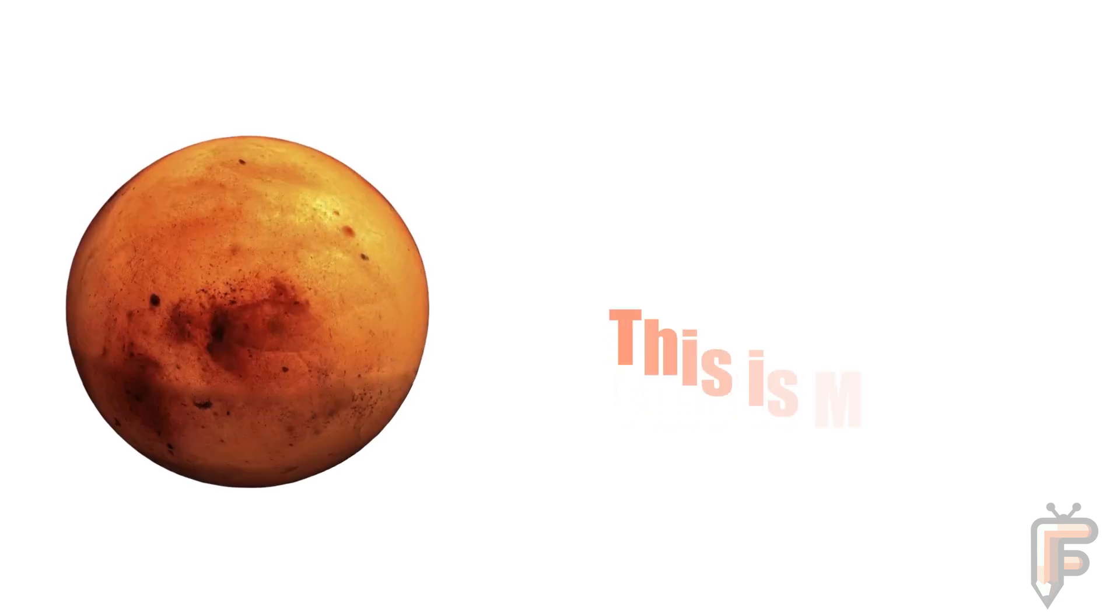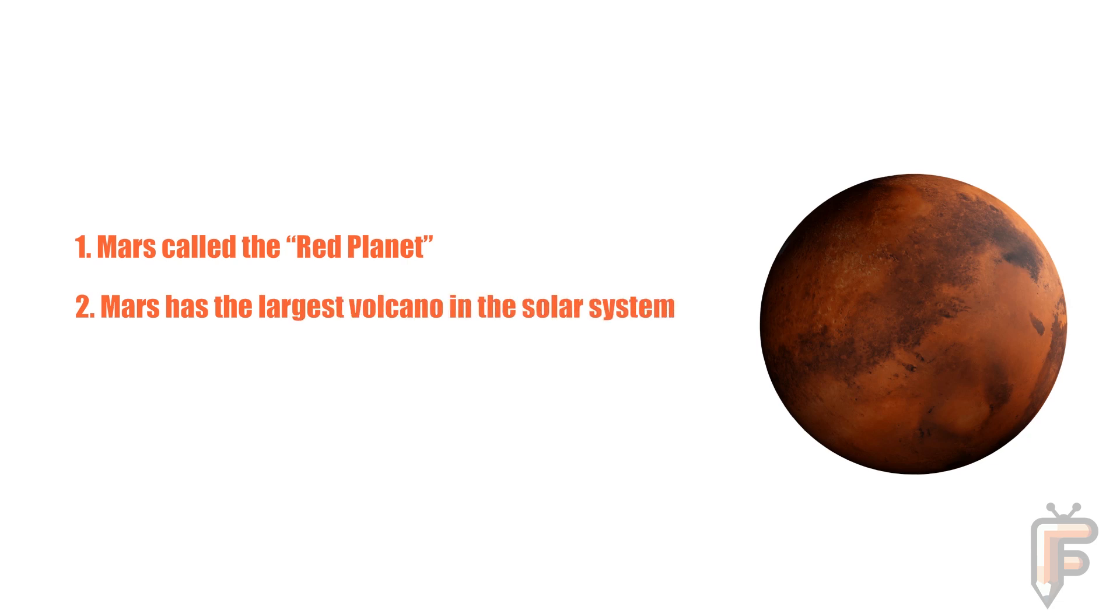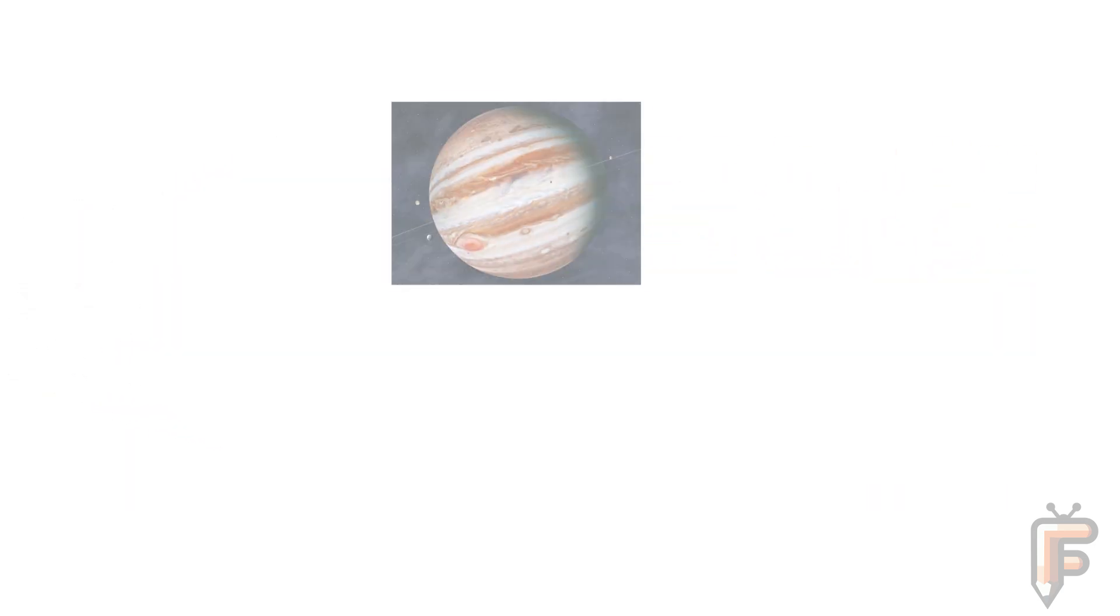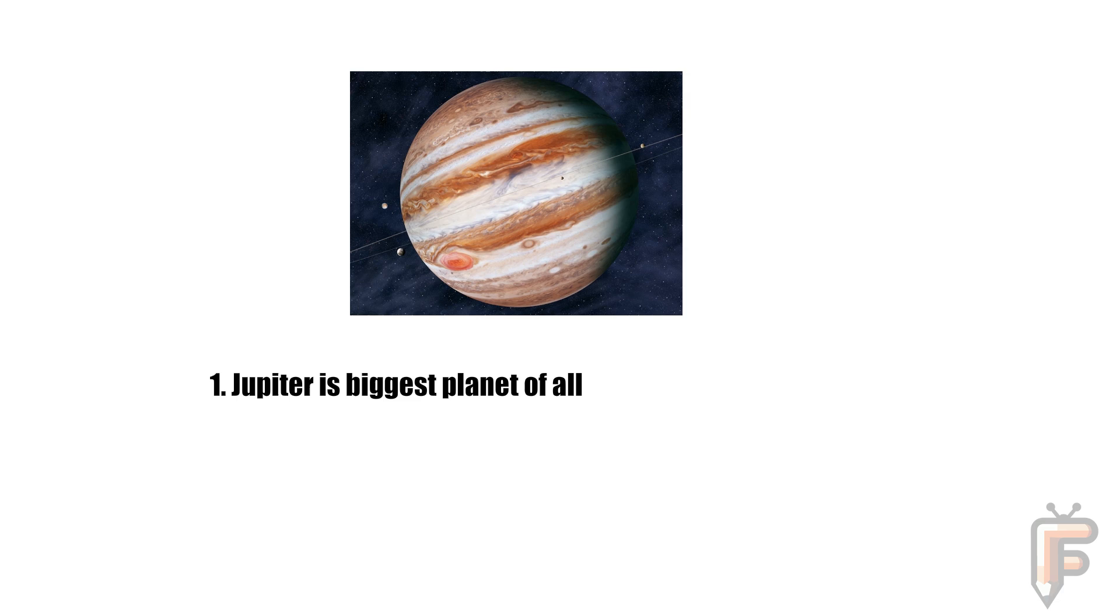This is Mars. Mars is called the Red Planet. Mars has the largest volcano in the solar system. This planet may have water underground. This is Jupiter. Jupiter is the biggest planet of all. Jupiter has a big storm called the Great Red Spot. This planet has 95 moons.